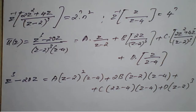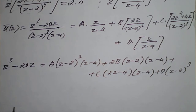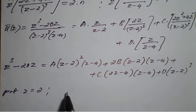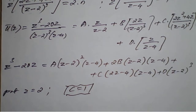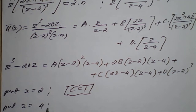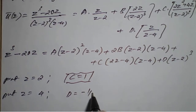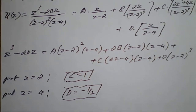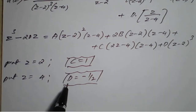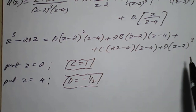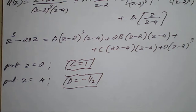Now finding the values: putting Z=2, you get C=1. Putting Z=4, you get D = -1/2. Cross-check these results. Only two direct substitutions are possible since we have Z-2 and Z-4 as the only roots. So we now equate coefficients of Z³.